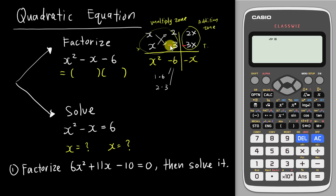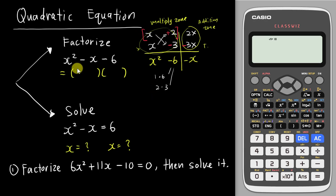So I add a negative for it — if there's no sign, it means plus. Then I take these two brackets: the first one is x plus 2, and the second bracket is x minus 3. This is how I do the factorization.